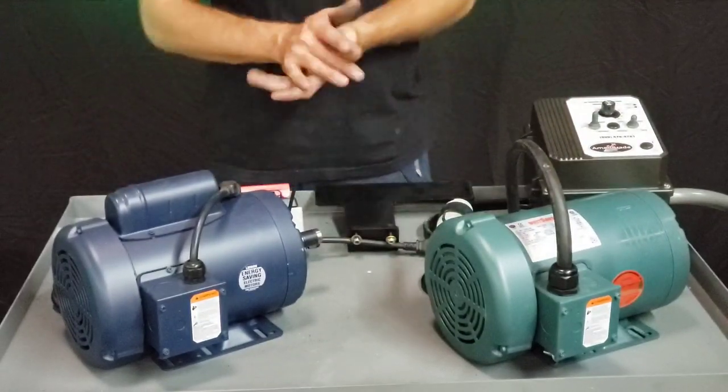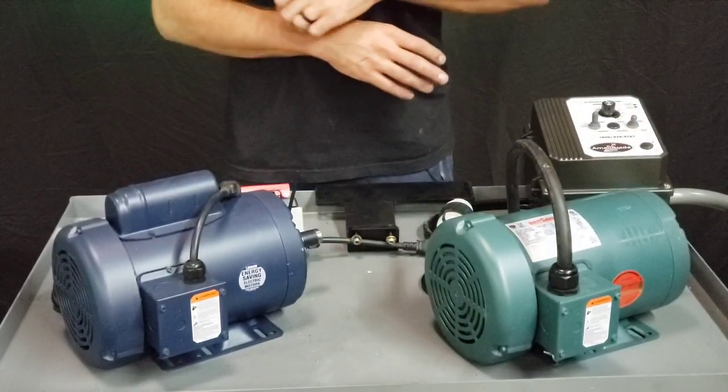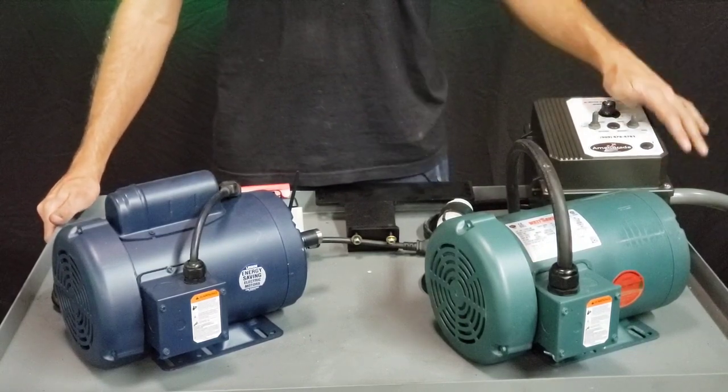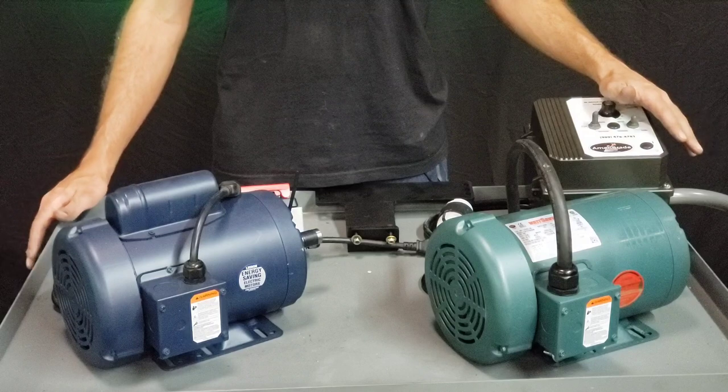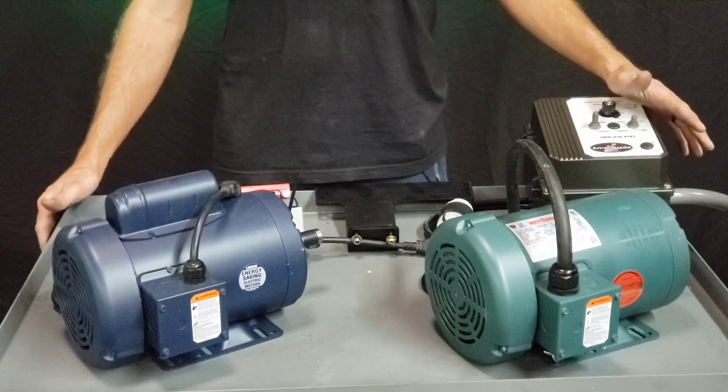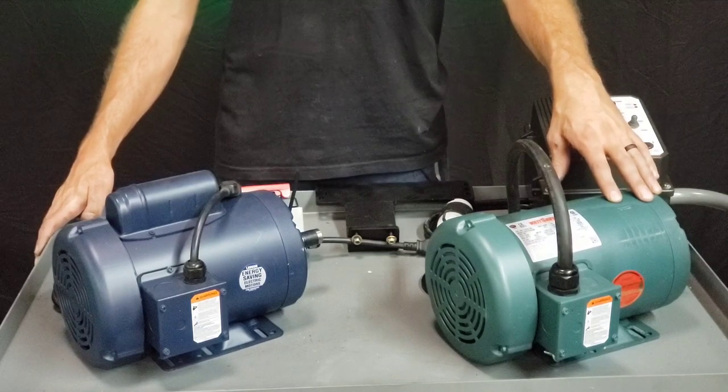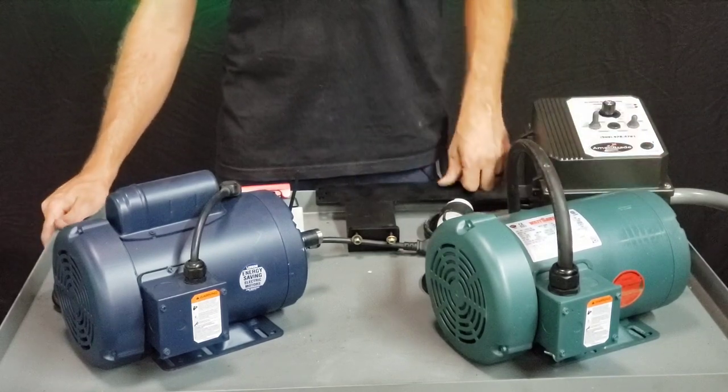And then finally, just some people like to run the belt slower if they're trying to be real delicate or precise or if they're just learning and the full speed is just too intimidating. So, other people may have other reasons why they like the variable speed, but those are the main reasons we know of.